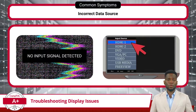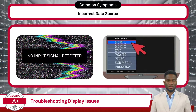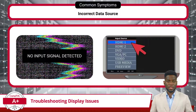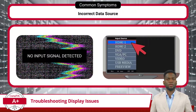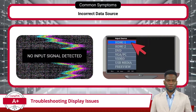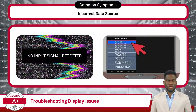For our first display issue, we have incorrect data source selection. While troubleshooting a projector or monitor, this can manifest as a lack of image or an error message like 'no input signal detected.' This common issue often occurs when users inadvertently choose the wrong input source on the display device. Resolving this issue is relatively straightforward — by verifying and adjusting the input source settings to ensure the correct one is selected, you can effectively remedy the situation.